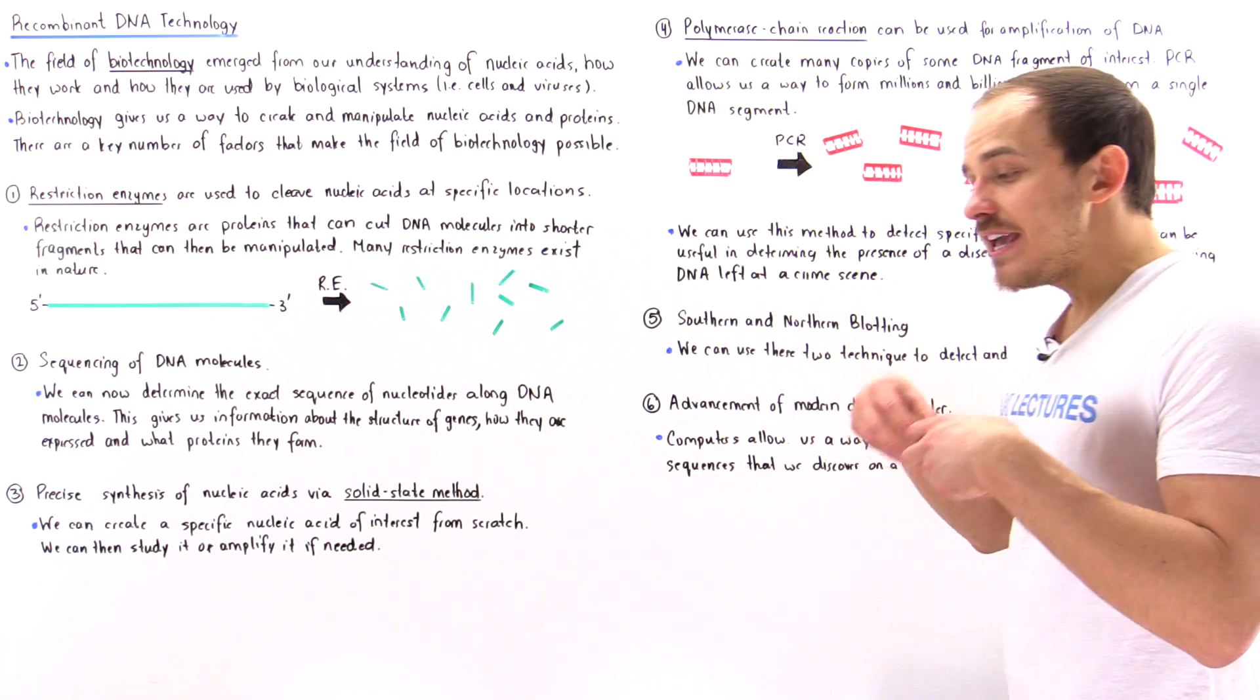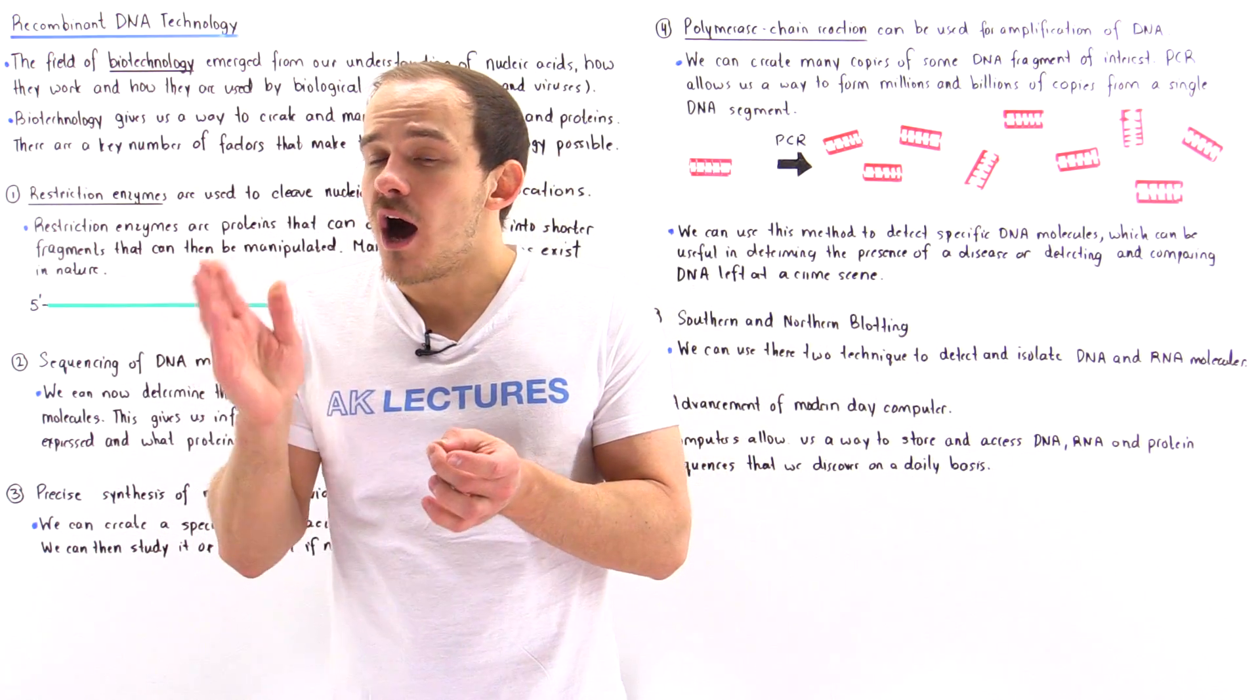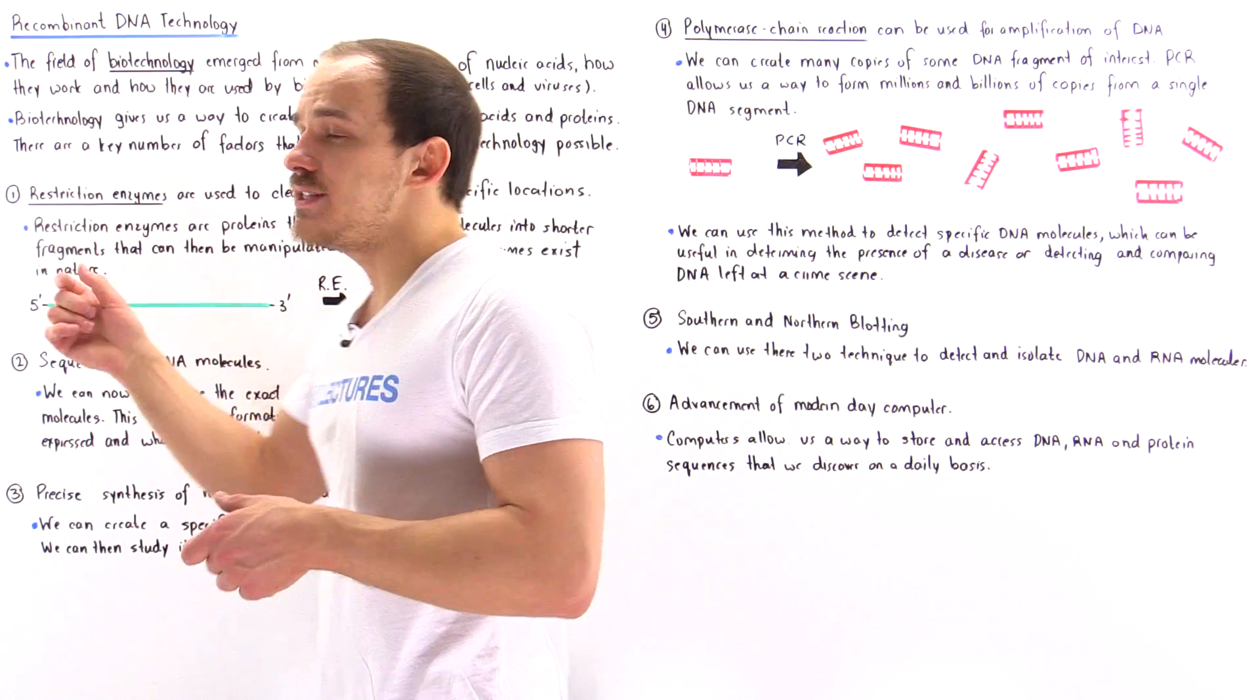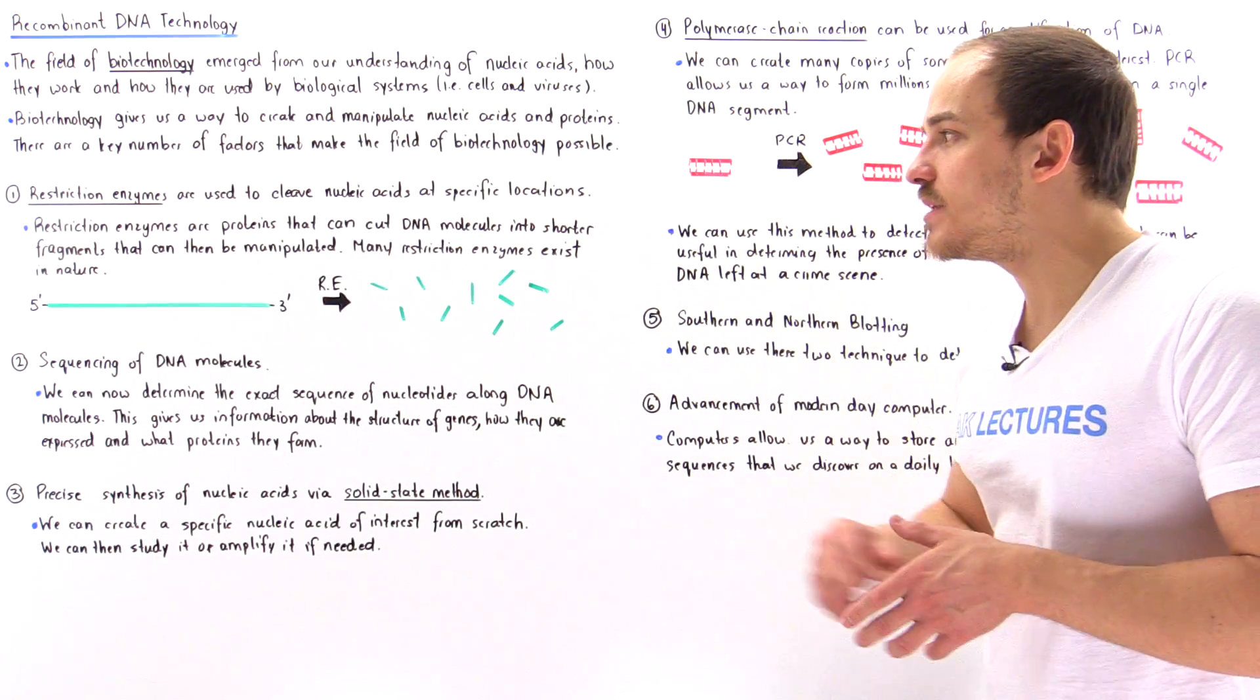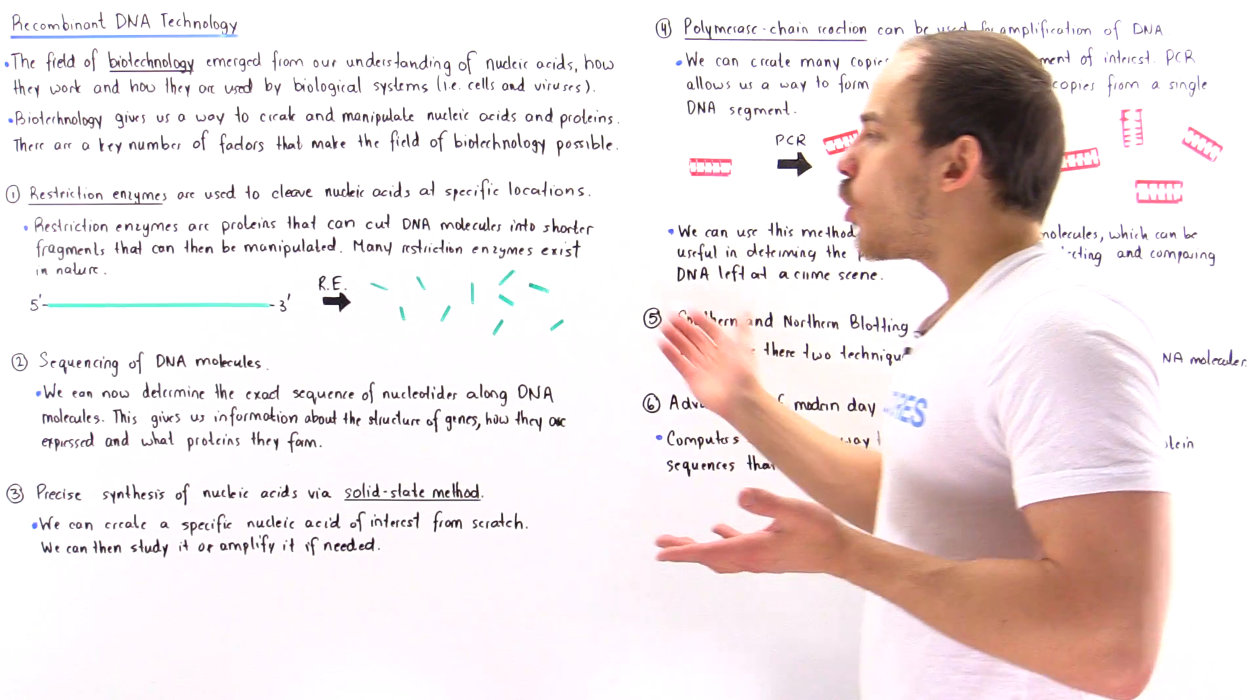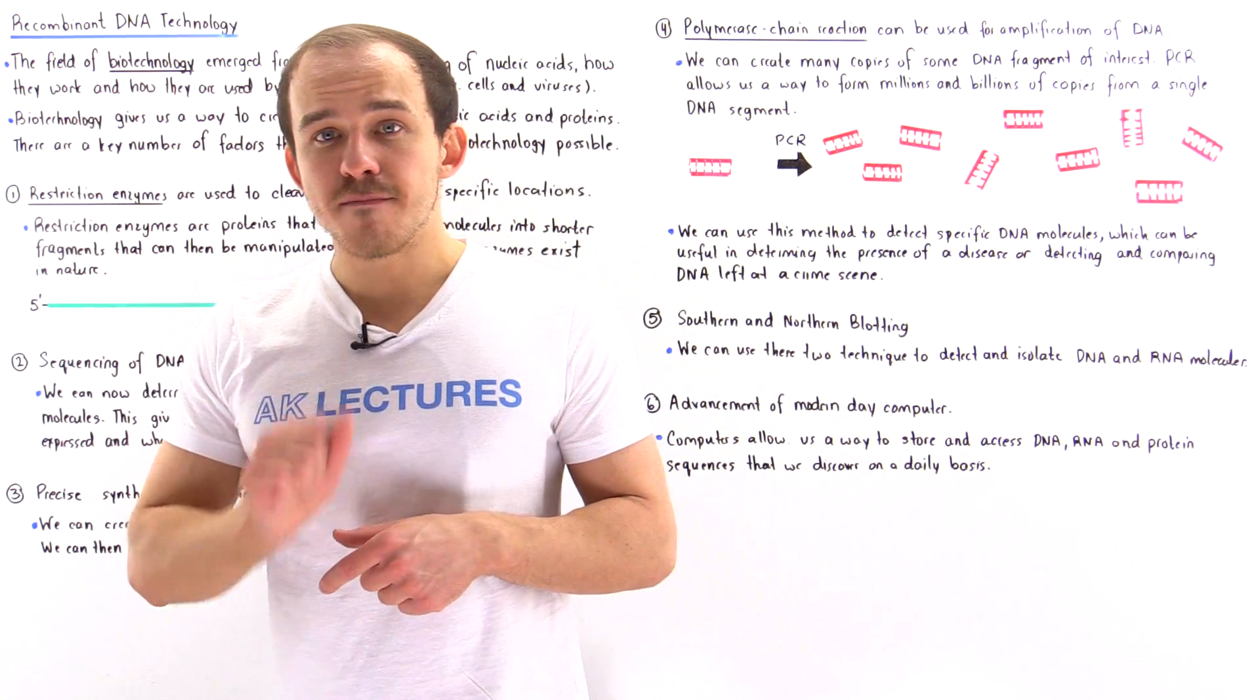And so what that means is, if we can extract and collect these restriction enzymes, we basically have a very efficient way of cleaving our DNA molecules at specific locations. So for instance, if we want to study the following DNA molecule, we can cut it up into many smaller fragments by using restriction enzymes. And then we can analyze and study and manipulate and amplify all these different types of fragments. In fact, we can use these fragments to essentially sequence DNA molecules.